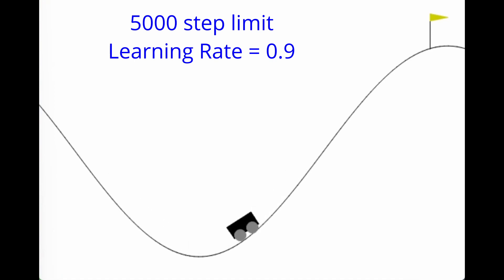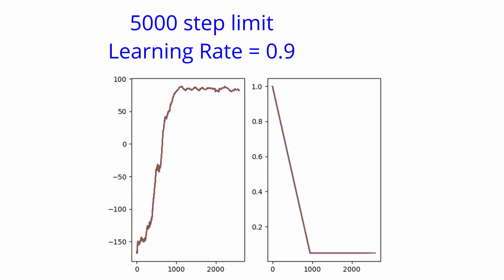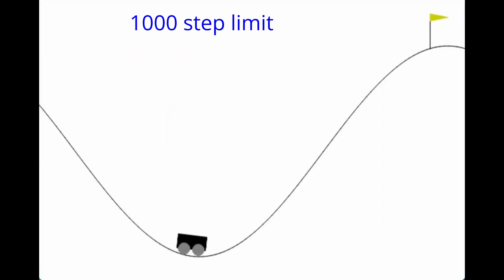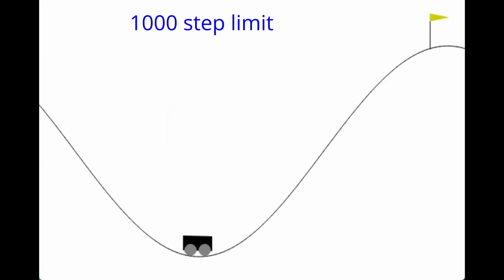Finally, at a learning rate of 0.9, the car is able to optimally solve this map. We can see that learning was fairly efficient and steady, and at the end it's fairly stable.